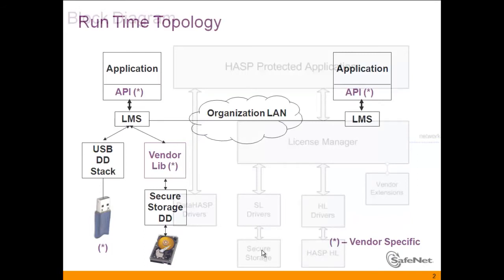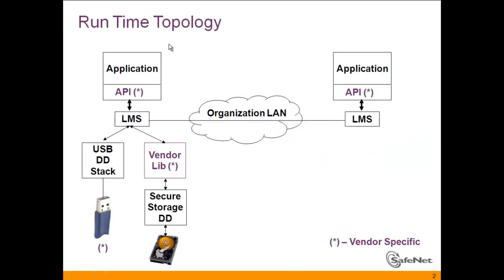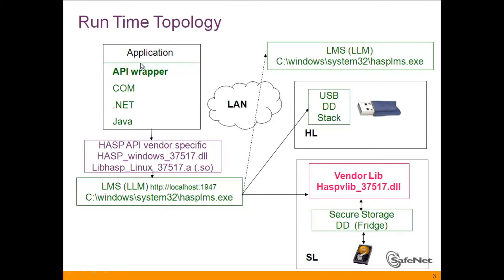Let's see another view. We see an application with API or envelope on one machine, and on another machine the same application working with the API. Every machine has its own license manager service, and there is communication between the license managers. Each license manager has a USB stack to communicate with a hardware key and a vendor lib to communicate with a secure storage — the SL key — which resides between partitions of the hard disk.